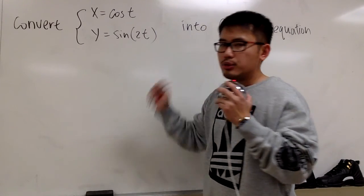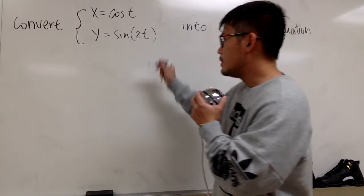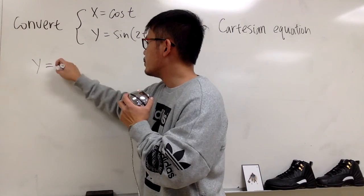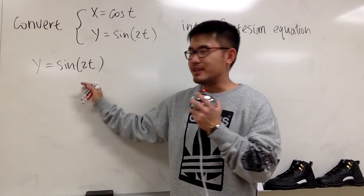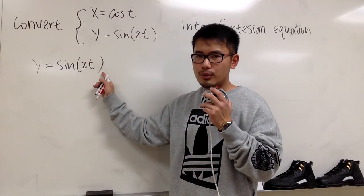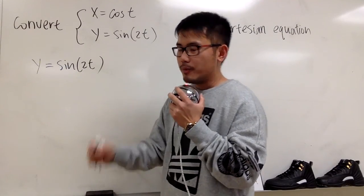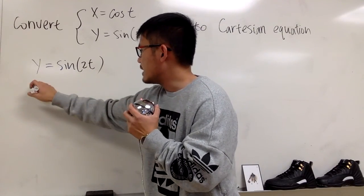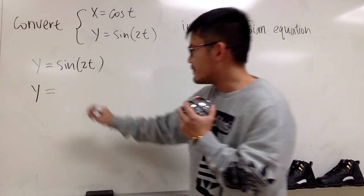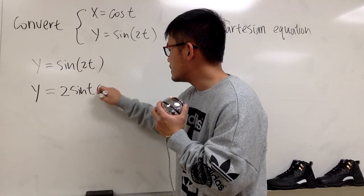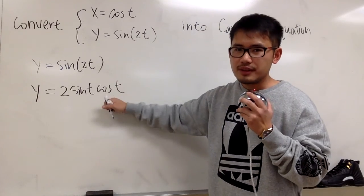We don't like to have sine and cosine with different angles, because that gives us trouble. If you look carefully, y is equal to sine of 2t — we have another way out, because this is just a double angle. We have a double angle formula for the sine. So look at the y equation: by the double angle formula, we have y equals 2 sine t times cosine t.